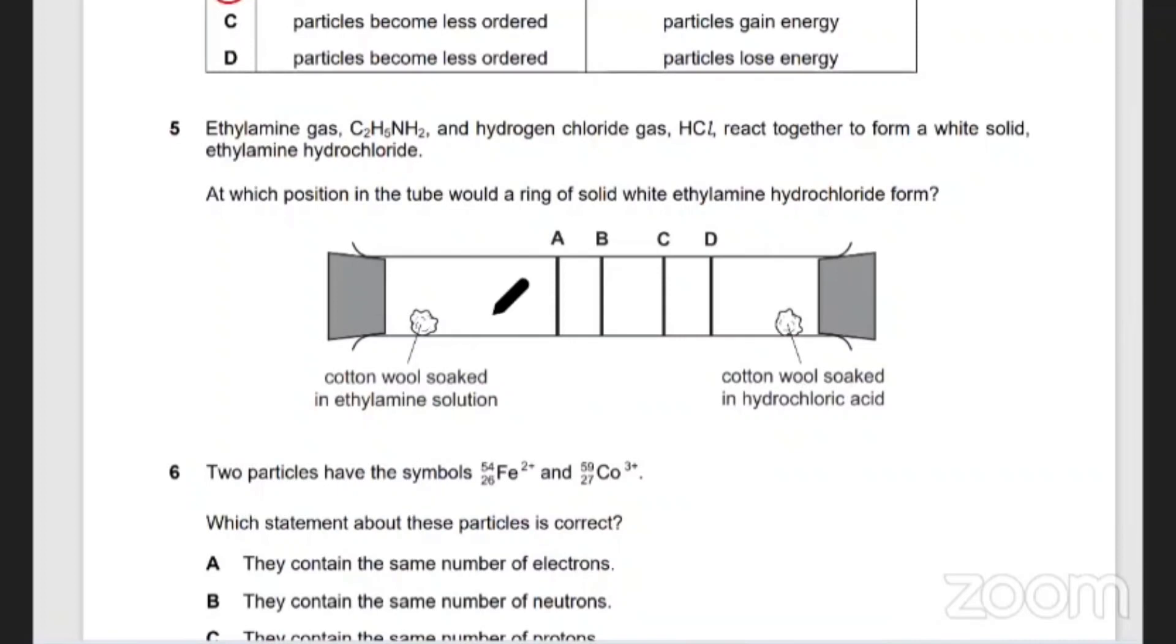Okay, let's move on. Ethylamine and hydrogen chloride gas react together to form, so particles of ethylamine, that's C2H5NH2. If you calculate the MR, the mass of this particle.